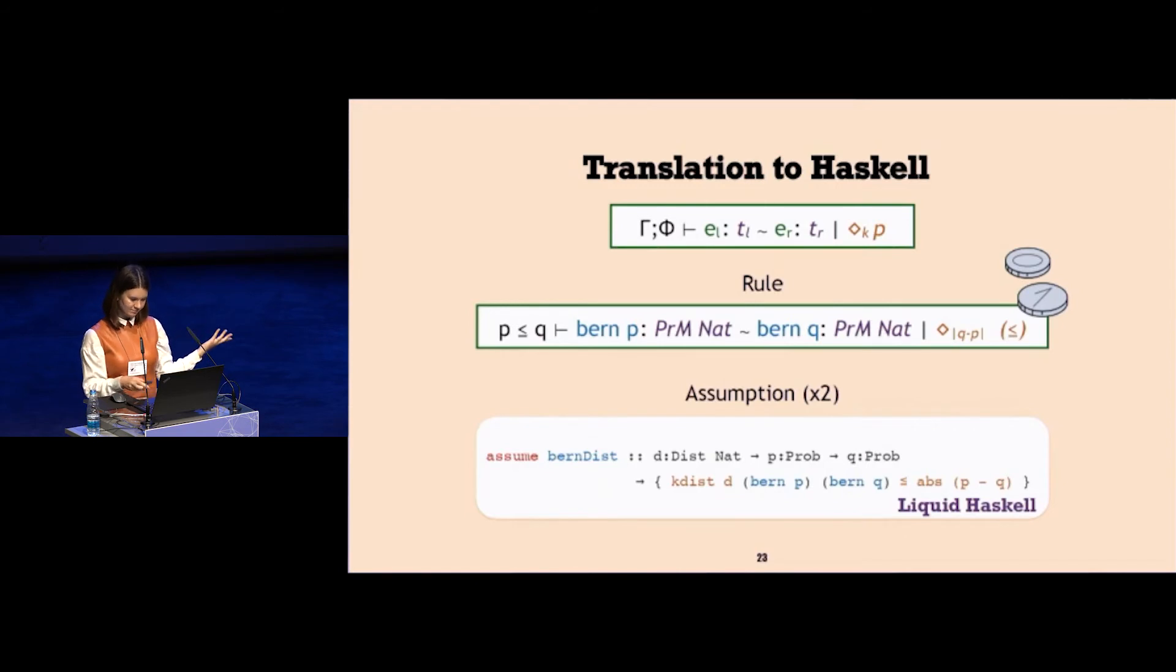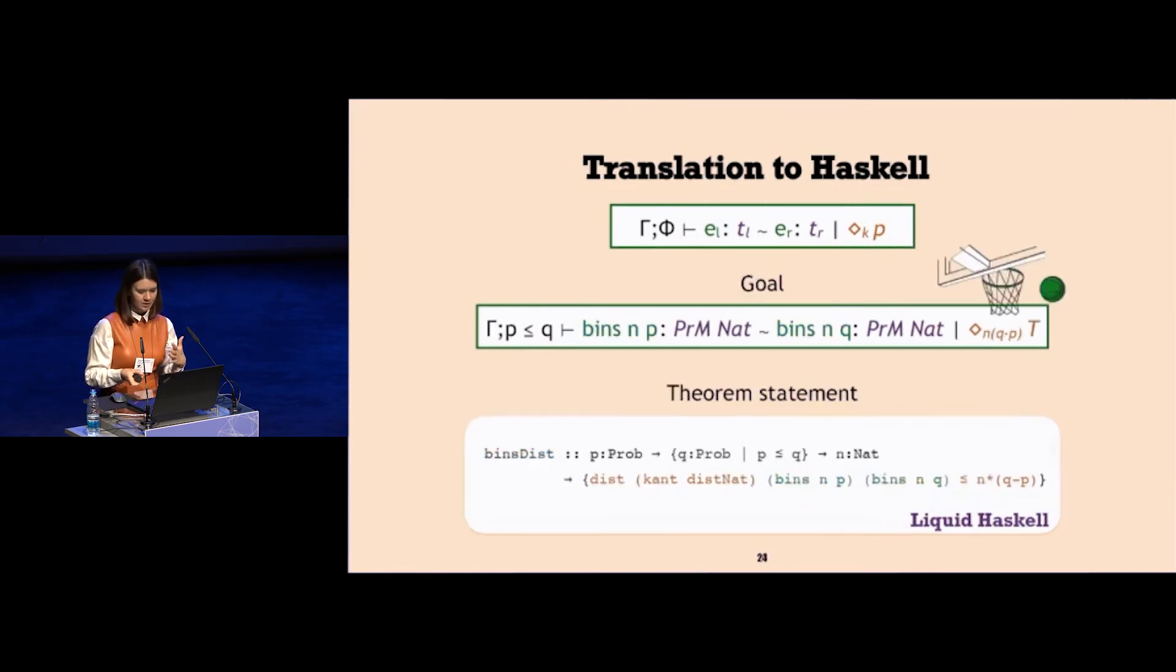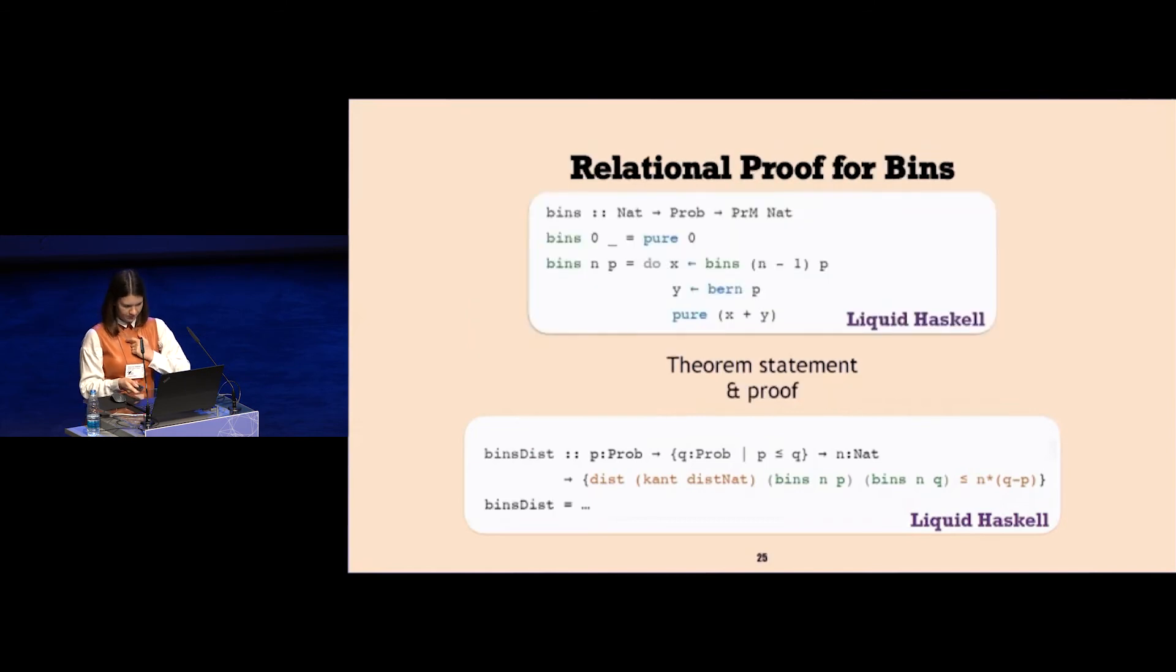It translates to two assumptions in liquid Haskell using the keyword assume. This one on the slide tells me the distance bound. In the result type of this assumption, you can see the same inequality that we required for the meaning of the judgment. Having the building blocks as typing rules, we are now ready to prove our statement about bins. This is how you write the theorem statement, pretty much the same, but it doesn't use the assume keyword, which means that we actually need to prove this statement. What the statement tells is again that the distance between two runs of the programs bins p and bins q can be upper bounded by n multiplied by q minus p.